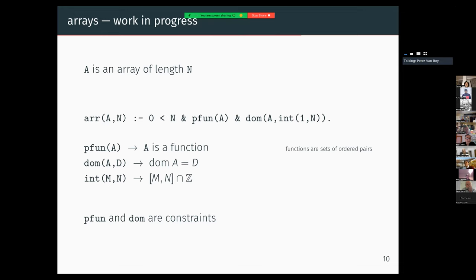Two minutes. Two minutes. Okay, good. This is part of work in progress. With this expressive power we can encode arrays. For instance, we can define a SetLog program representing an array A of length N. It's true if N is more than zero, A is a partial function (or a function if you want), and the domain of A is the integer interval from 1 to N. This is the classical definition of array given, for instance, in the B notation.